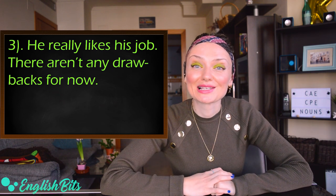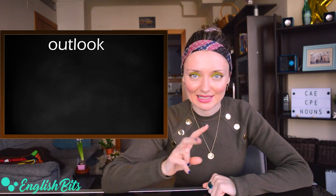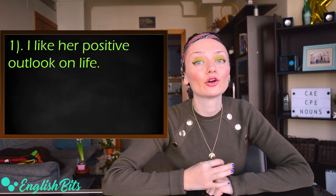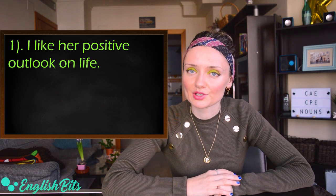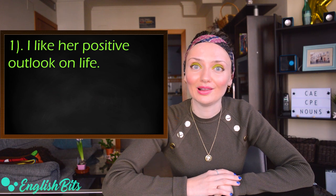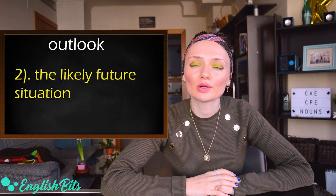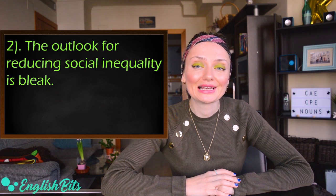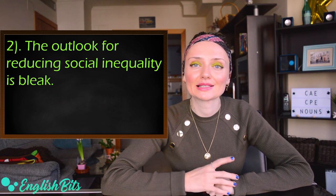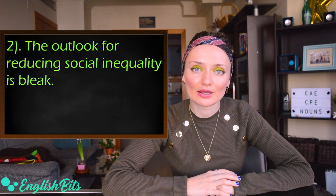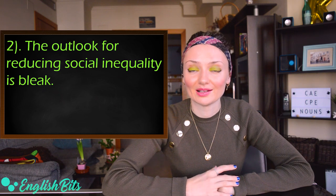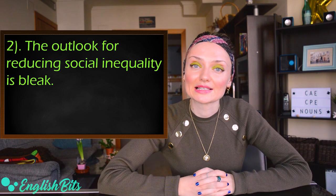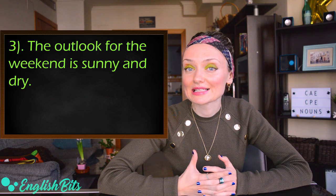Our second noun is outlook, which has two meanings. The first is a person's attitude to life and the world — for example, 'I like her positive outlook on life.' The second meaning is the likely future situation — for example, 'The outlook for reducing social inequality is bleak.' Bleak is a C2 adjective meaning with little or no hope for the future. Another example: 'The outlook for the weekend is sunny and dry.'